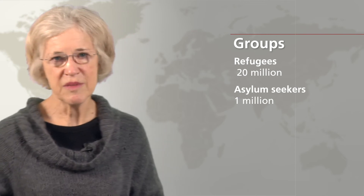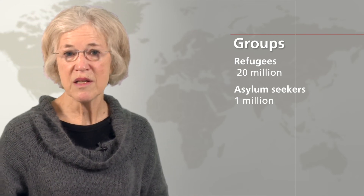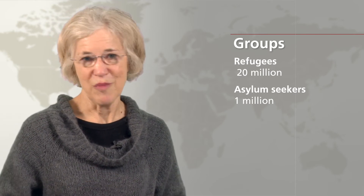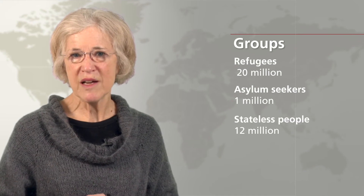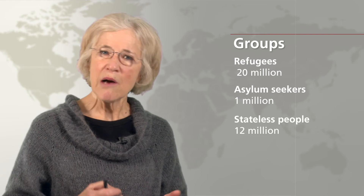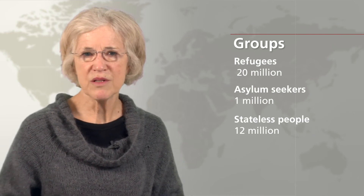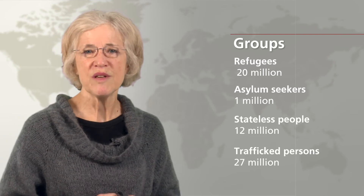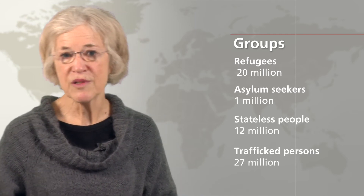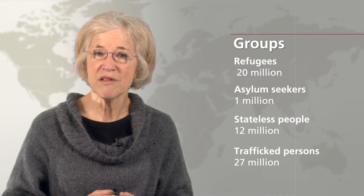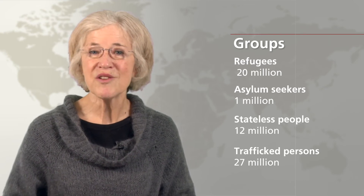Other groups include asylum seekers — people who have applied for refugee status — estimated at around 1 million, and stateless people estimated at around 12 million. Turning to undocumented migrants, some of whom were trafficked, they face very special challenges. Estimates for trafficked persons run around 27 million. Although trafficked persons are in principle protected by special conventions and regional agreements, they often live, by the nature of their work, under the radar with little access to health care. Similar considerations hold for others who are undocumented, such as domestic workers employed in private households without public workplace scrutiny.